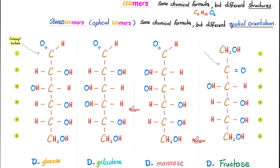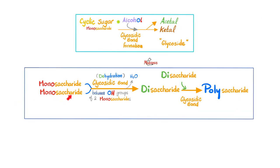If you add monosaccharide to monosaccharide and make a glycosidic bond, what do you get? A disaccharide. And then keep adding, you end up with a polysaccharide. Name the bond or the linkage: glycosidic linkage.